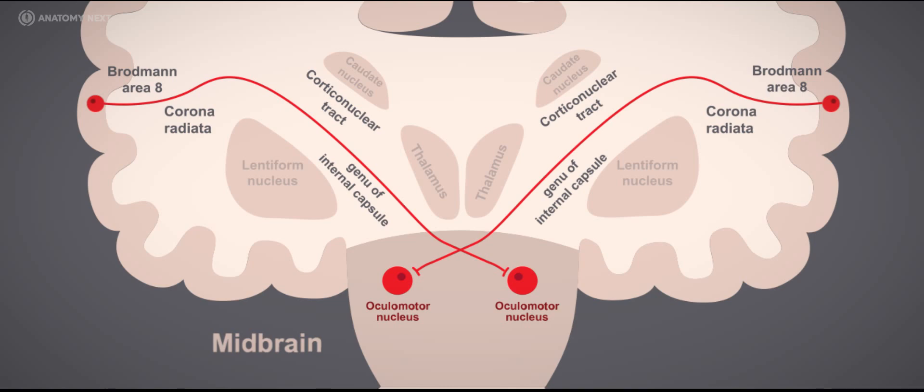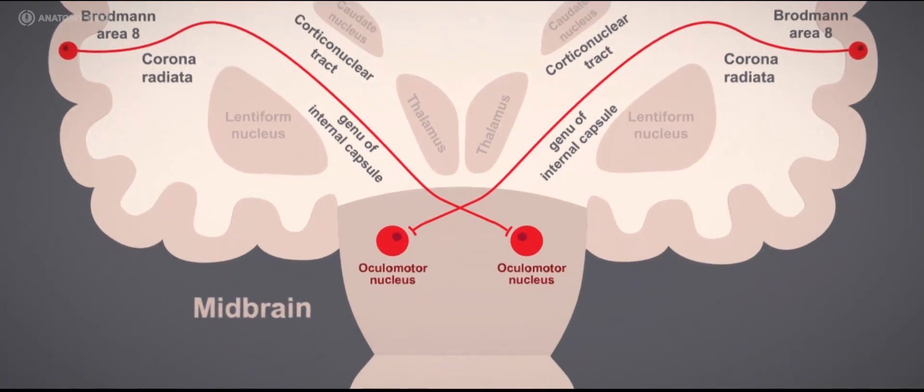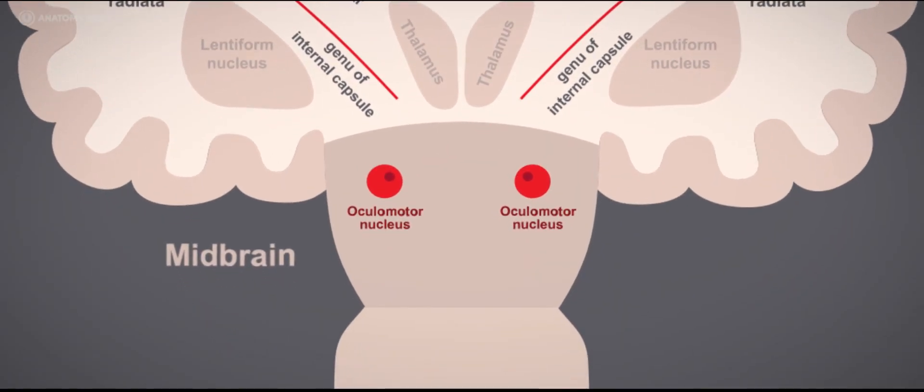But wait a minute, we missed one more detail. Actually, most of the axons arising from the motor neurons of the cerebral cortex do not synapse with neurons of the oculomotor nuclei directly. They first synapse with small neurons in the reticular formation called interneurons. These interneurons then synapse with the motor neurons of the oculomotor nerve.